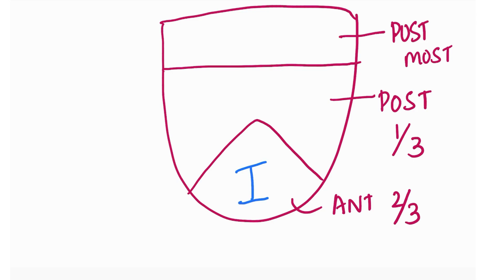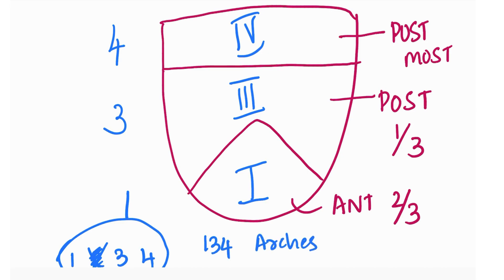Anterior two-third is derived from the first arch, posterior one-third from the third, and posterior most from the fourth. So it's one, three, four - like writing one, two, three, four but without the two. You need to remember 134 to remember the arches.